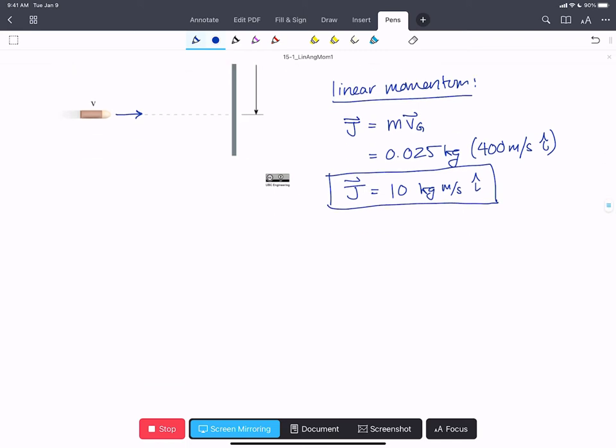So when we're doing equations with linear momentum in planar rigid body, we can then split this into Jx which is 10 kilograms meters per second, and Jy which is 0.